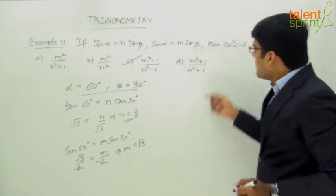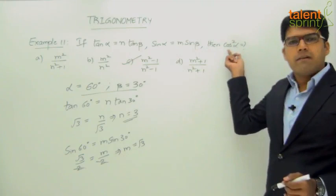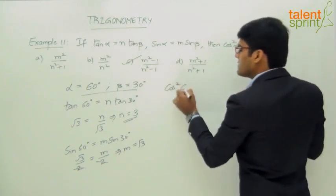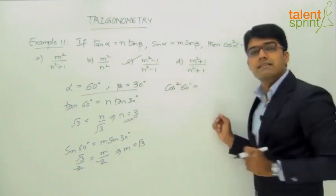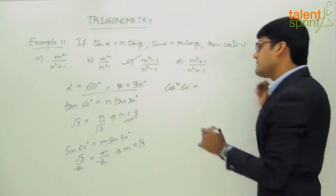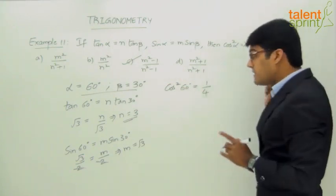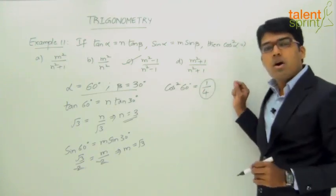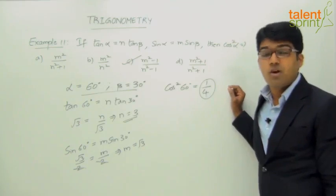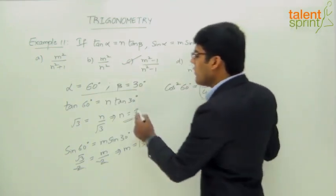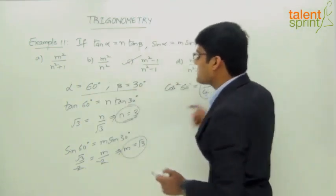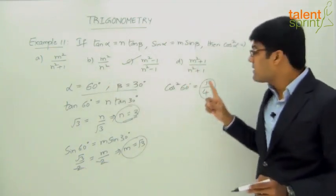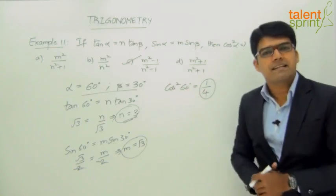Our requirement is cos²α. Since α = 60°, we need cos²60°. We know cos 60° = 1/2, so cos²60° = 1/4. Our answer must therefore have a numerical value of 1/4. Now substitute m = √3 and n = 3 into each answer option and check which one gives 1/4.